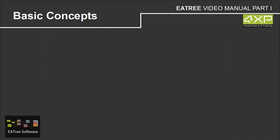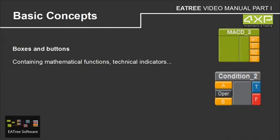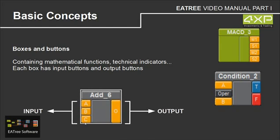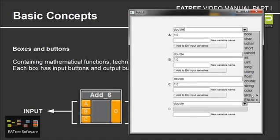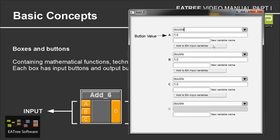Now we're looking at some basic concepts in using EA3. We build our expert advisor with boxes and buttons — this is how they look. They contain mathematical functions, technical indicators, and so on. Each box has input buttons on the left side and output buttons on the right side. In this example we only have one output button, but we can also have two or maybe four. If we double-click on the box we get this panel where we can change the data type. We also have functions for new variable name and add to EA input variables, but this is too advanced for now.